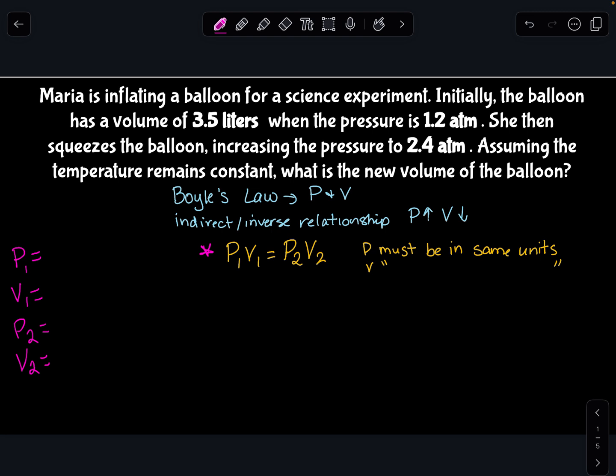So Maria is inflating a balloon for a science experiment. Initially, the balloon has a volume of 3.5 liters. So we're going to put that 3.5 in as our V1 when the pressure is 1.2 ATM. So when pressure is at 1.2 ATM, I have a volume of 3.5 liters.